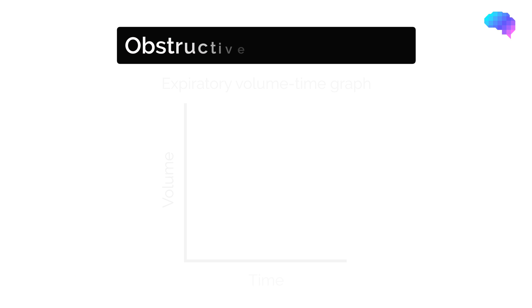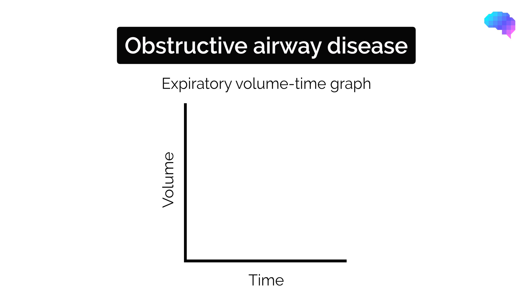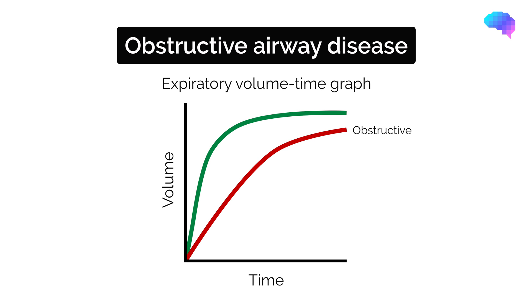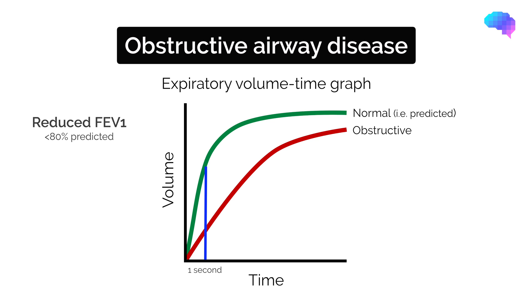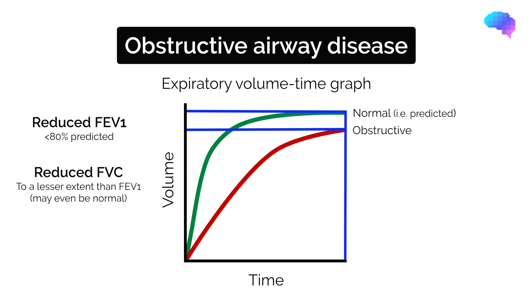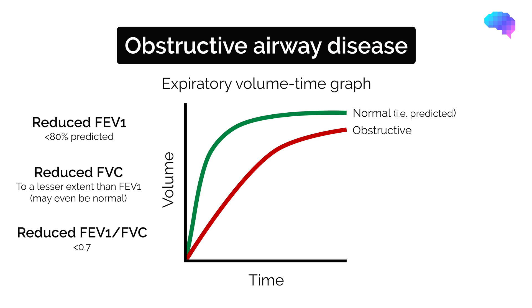Now let's look at some graphs to compare obstructive versus restrictive disease. Looking at the obstructive spirometry pattern, if we compare the line representing the obstructive respiratory pattern to the normal pattern, we can see there is a significantly reduced FEV1 to less than 80% of the predicted value. This is because in obstructive airway disease it's difficult to quickly expel the air. The FVC is also reduced, though to a lesser extent than the FEV1, and can even be normal. As a result, the overall FEV1 over FVC ratio is reduced to less than 0.7.